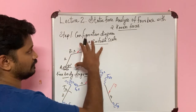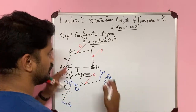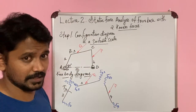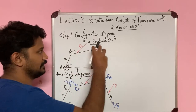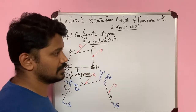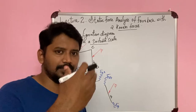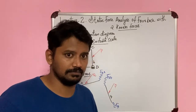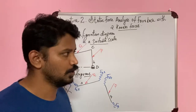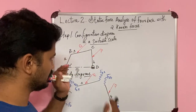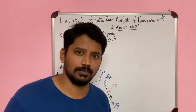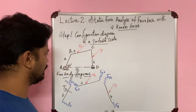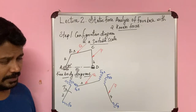So the first step is always drawing the configuration diagram. We draw the configuration diagram as per the measurements given in the question and as per a suitable scale. Sometimes dimensions will be in meters, which can't fit on paper, so we confine it into the space by taking a suitable scale. After drawing the configuration diagram, we have to draw the free body diagram.